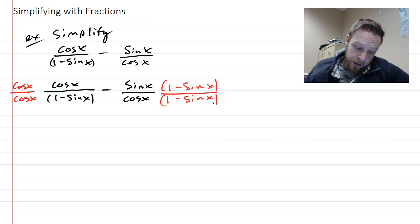So one minus sine x all over one minus sine x. Okay, the idea is that now under each fraction we have cosine x, one minus sine x, and then we can just focus on doing the top.